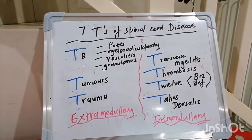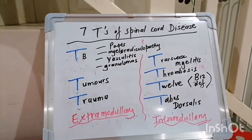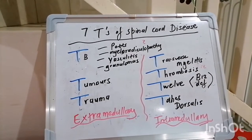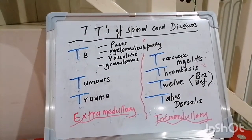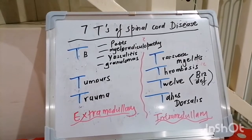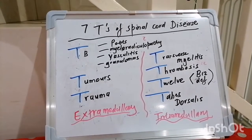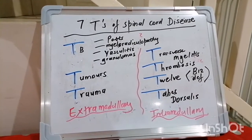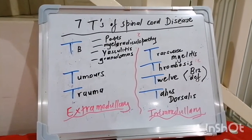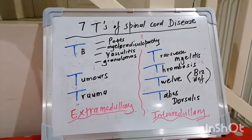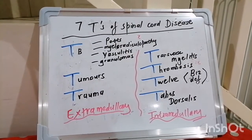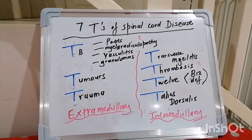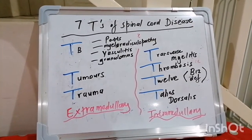Regarding motor manifestations, upper motor neuron signs occur early with extramedullary lesions and late with intramedullary. Lower motor neuron signs are typically segmental with extramedullary versus a diffuse pattern with intramedullary. In terms of sensory involvement, extramedullary lesions show ascending involvement with sacral involvement, but intramedullary shows descending involvement with sacral sparing. Associated sensory loss is present with extramedullary but dissociated with intramedullary lesions. For autonomics, sphincter involvement occurs late with extramedullary but early with intramedullary.